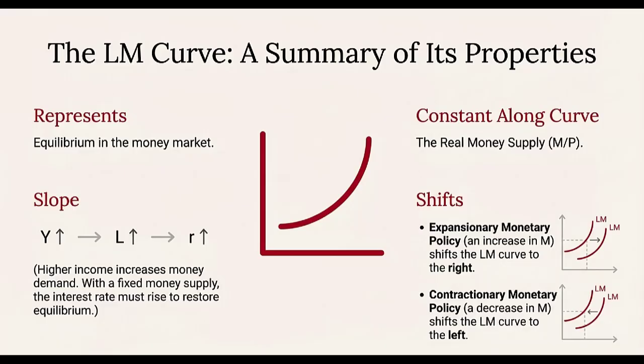So we have our two pieces: the IS curve representing the goods market sloping down, and the LM curve representing the money market sloping up. Now we bring them together. Their intersection defines the general equilibrium — that single point, R0 and Y0, that gives us the one interest rate and the one output level where both markets are in equilibrium at the same time.